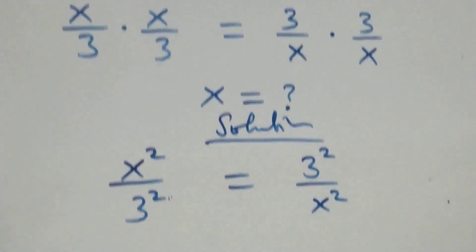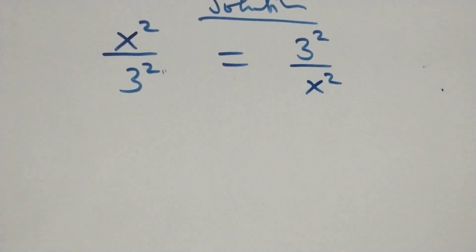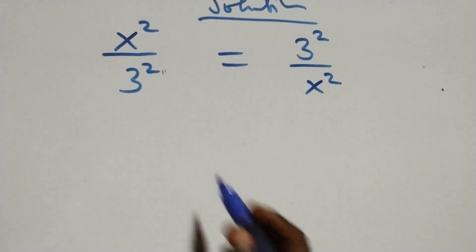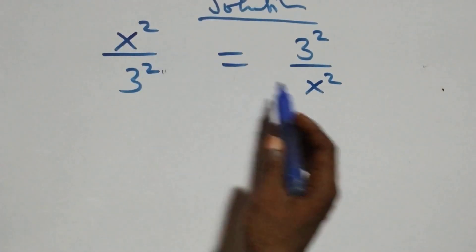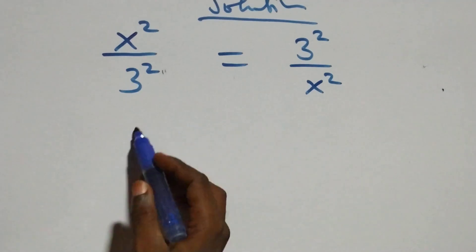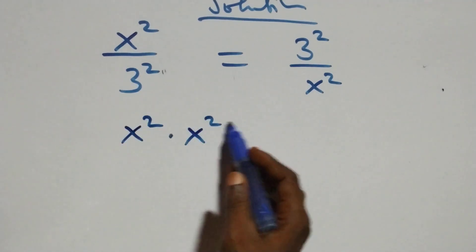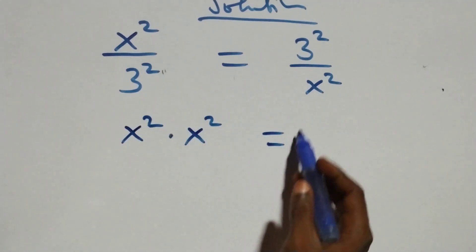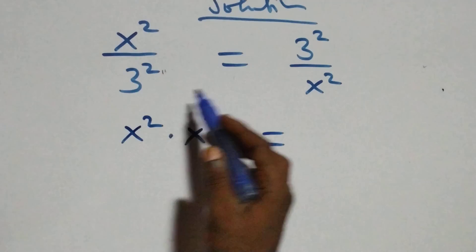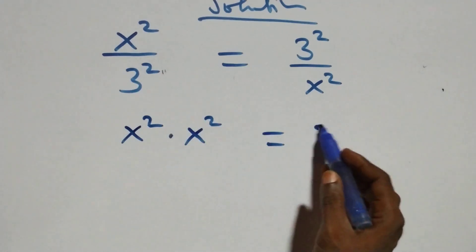In the next step, we can cross multiply and we have x squared times x squared equals three squared times three squared.